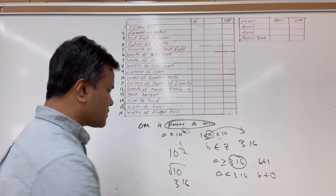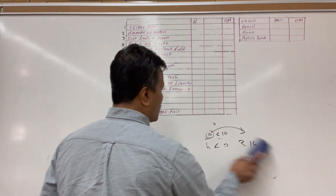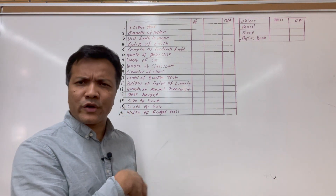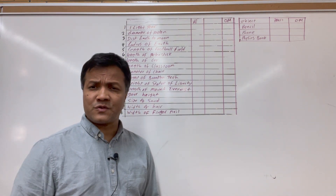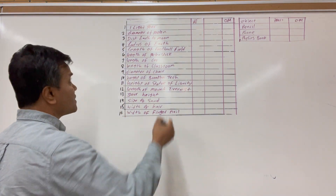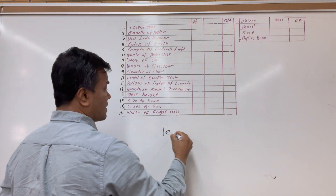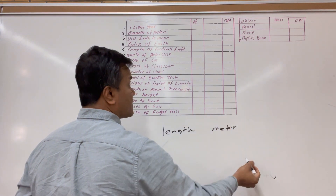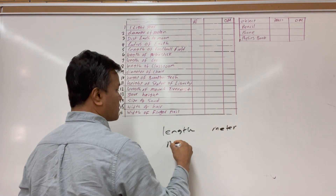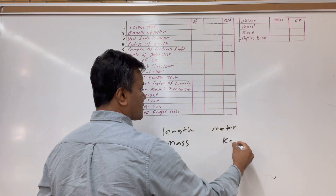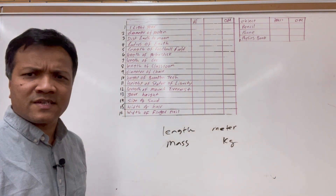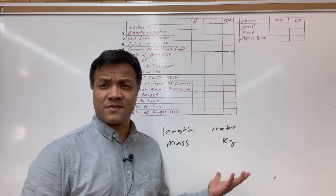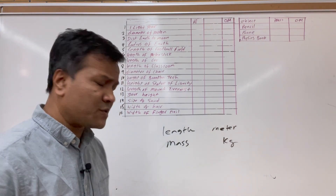Now we're going to apply this rule. Whenever we talk about order of magnitude of anything, we have to convert it to a standard unit. For length, the unit is meters. For mass, the unit is kilograms. So if you measure in milligrams, you have to convert to kilograms; if in millimeters, convert to meters.